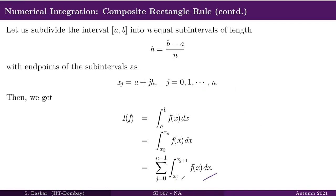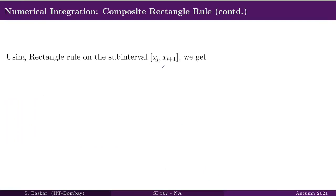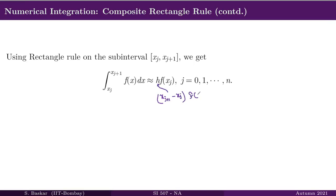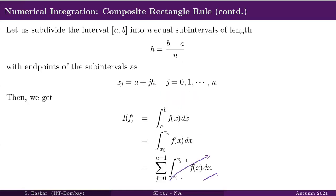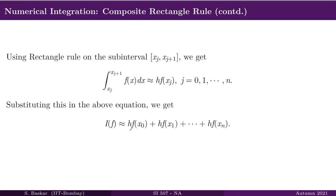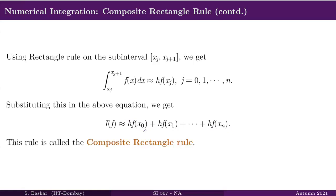Applying the rectangle rule to each subinterval [x_j, x_{j+1}] approximates each integral by h·f(x_j), since x_{j+1} - x_j = h and the left endpoint of the subinterval is x_j. Replacing each term accordingly and summing from j=0 to n-1 gives the composite rectangle rule formula: h times the sum of f(x_j) for j=0 to n-1, which is the composite rectangle rule.